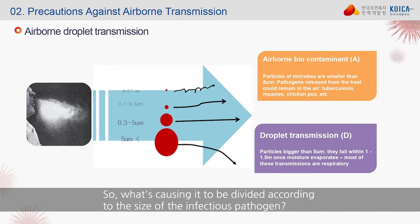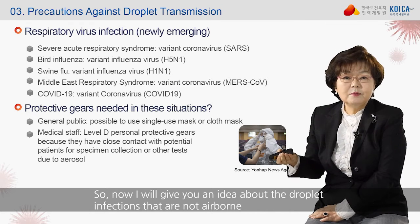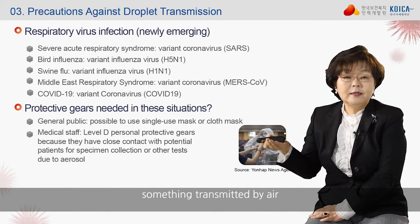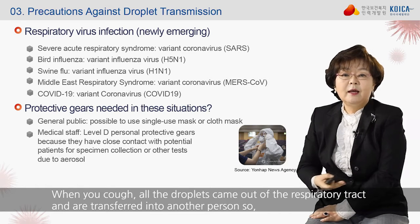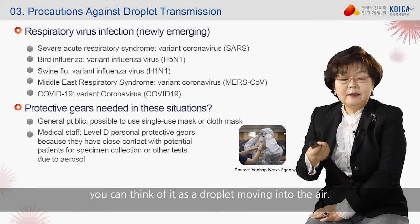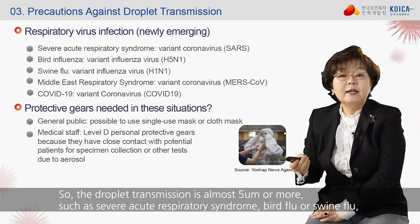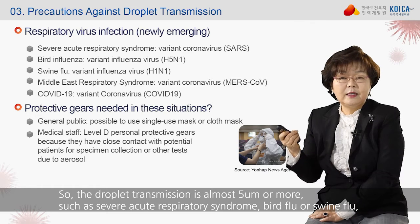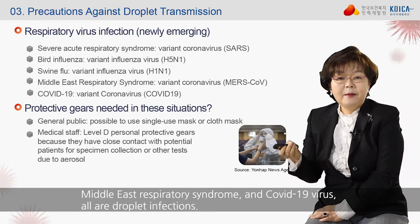Now I will explain droplet infections that are not airborne. When you cough, all the droplets come out of the respiratory tract and are transferred into another person — you can think of it as a droplet moving through the air. Droplet transmission involves particles of almost 5 micrometers or more. Examples include severe acute respiratory syndrome, bird flu, swine flu, Middle East respiratory syndrome, and COVID-19 — all are droplet infections.